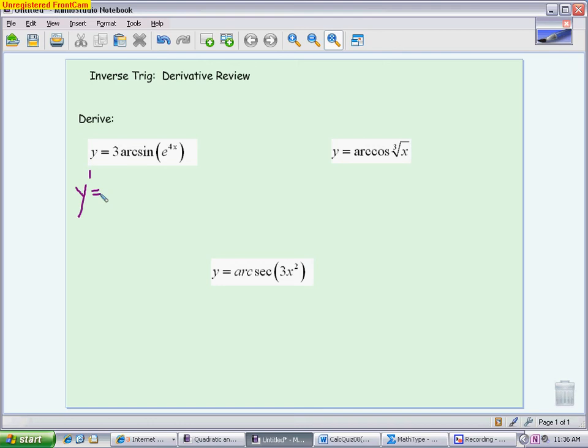For the first one, we need to derive e to the 4x. That will give you 4e to the 4x. The three you can either keep out front or multiply it by what you get on top. So we would have 4e to the 4x, or you could say 12e to the 4x over the bottom. In sine,